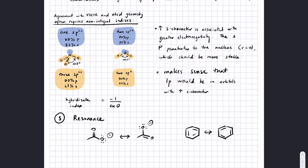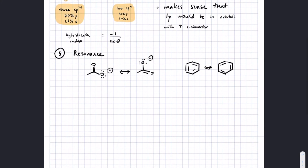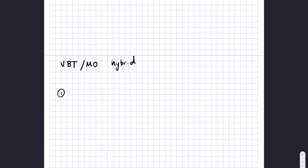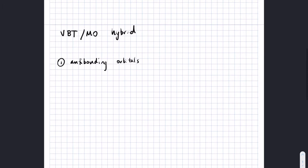In organic chemistry, we tend to use valence bond theory because a lot of our reactions involve changing one or two bonds, so it's useful to think about bonds. There are some concepts that most organic chemists bring in from molecular orbital theory that are useful, so we take a hybrid approach. One of these concepts that we mix in is the concept of anti-bonding orbitals.